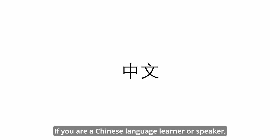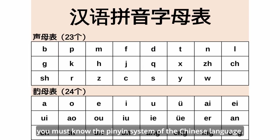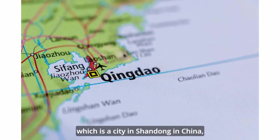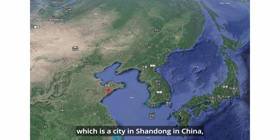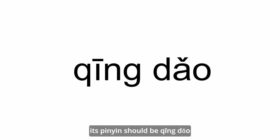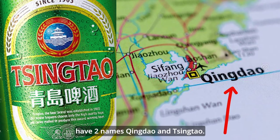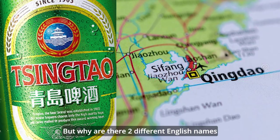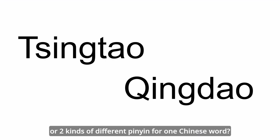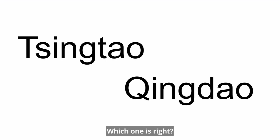If you are a Chinese language learner or speaker, you must know the pinyin system of the Chinese language. When we say the word Qingdao, which is the city in Shandong in China, its pinyin should be Qingdao. But its English name likely has two versions: Qingdao and Tsingtao. But why are there two different English names, or two kinds of different pinyin for one Chinese word? Which one is right?